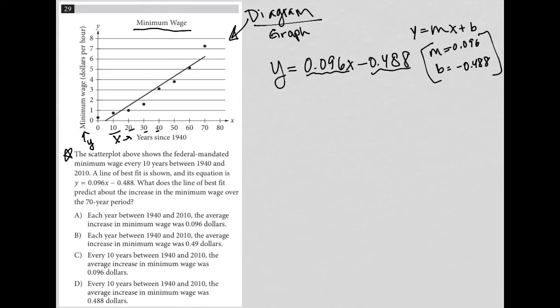So let's continue to read. So the question says, what does the line of best fit predict about the increase in the minimum wage over the 70-year period? So answer choice A says each year between 1940 and 2010, the average increase in minimum wage was $0.096.